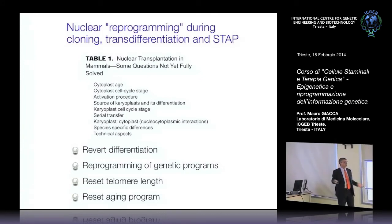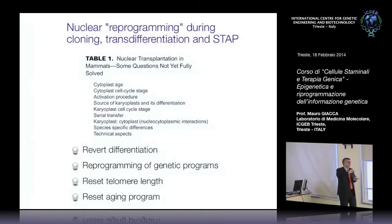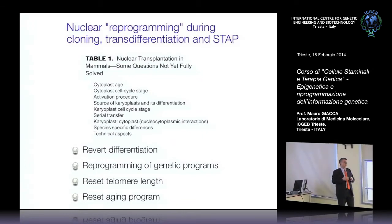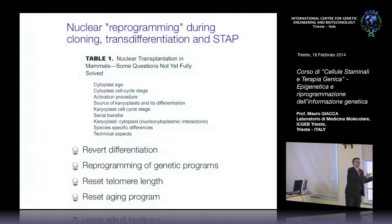Avete un computer nuovo con un hard disk pieno di programmi, potreste farci quello che volete, ma in realtà dovete usarlo tutta la vita soltanto per far grafici in Excel con quei dati impostati. Cosa fa la clonazione, piuttosto che il metodo IPS o il metodo STAP? Staccano la spina e la riattaccano, premono il tasto di reset, e quello stesso computer potete utilizzarlo stavolta per scrivere un testo.